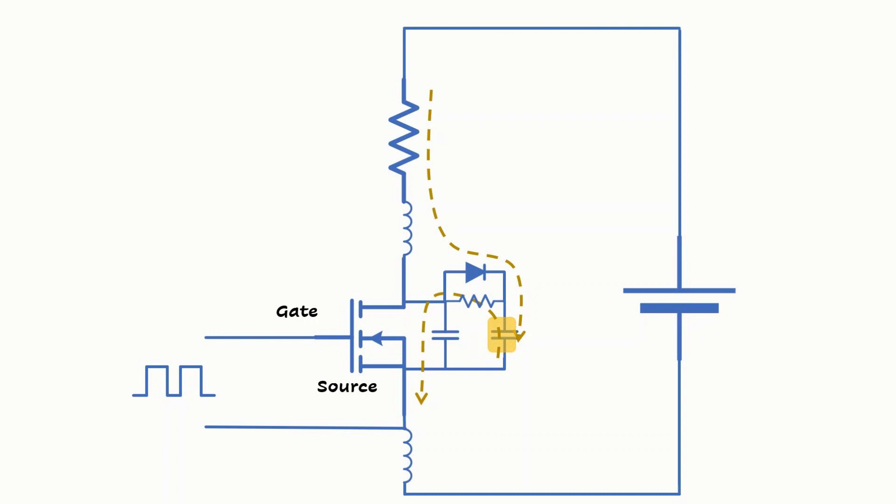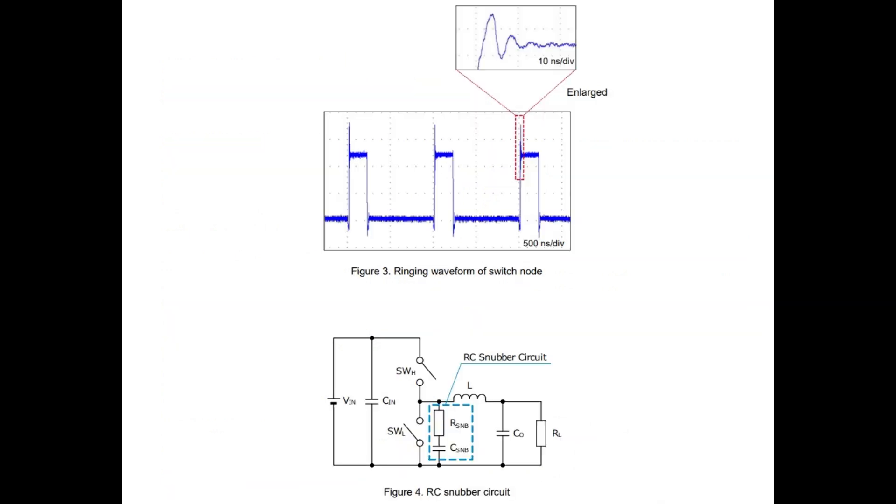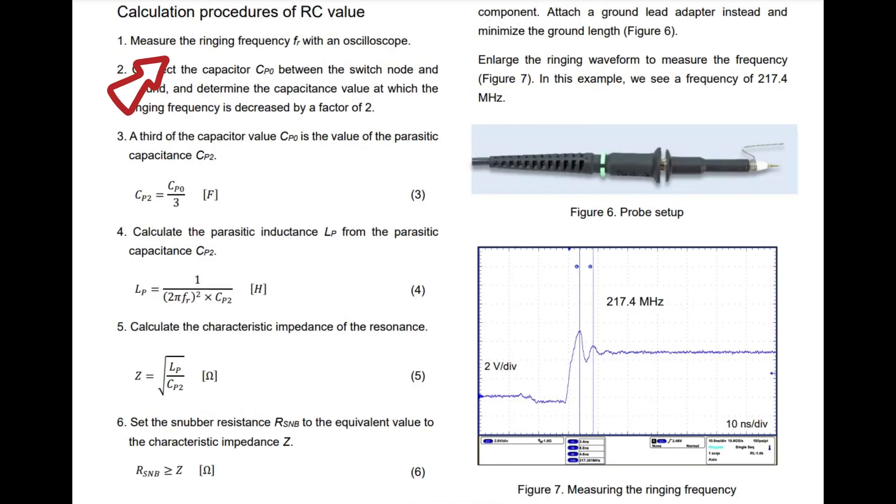But is there a practical way to determine the values of the resistance and capacitance of the snubber circuit? Here I'm sharing with you a document from Rohm titled snubber circuit for buck converters. But I think it's more applicable here as well. It says that you can observe the primary oscillation in your circuit appears between the drain and source, and you measure the oscillation frequency, and we call it FR. Then you connect a capacitor, we will call it here CP0, between the drain and source that will decrease the ringing frequency by a factor of 2.